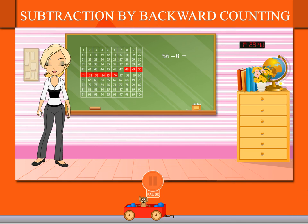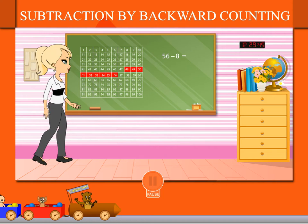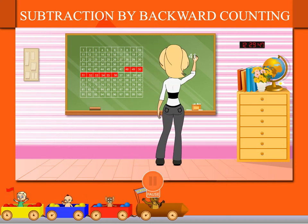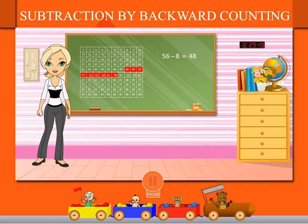She gets 48. Eight numbers backward is 48. So 56 minus 8 is 48. Easy!